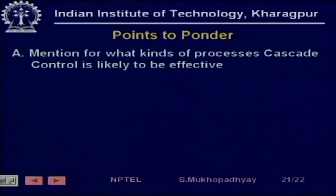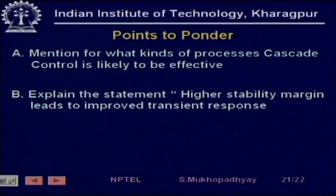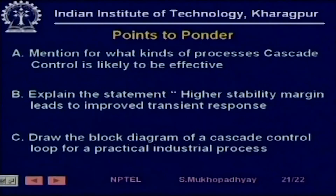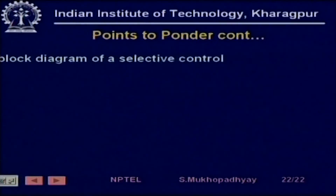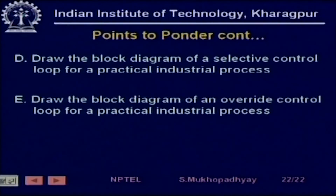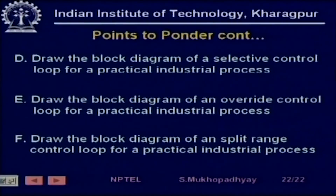Points to ponder: examine what kinds of processes cascade control is likely to be effective for, take some examples, and see how the two subsystems should be configured for effective process control. Also consider why a higher stability margin leads to improved transient response — this is related to the range of controller gains available. Draw the block diagram of a cascade control loop for a practical industrial process — this is very important. Similarly, block diagrams of selective control loops, override control loops, and split range control loops are useful exercises to be done.